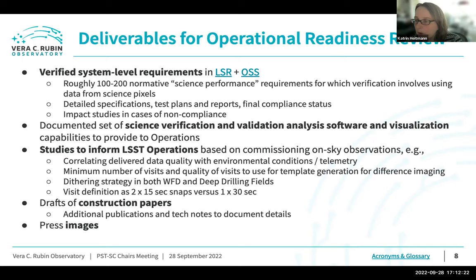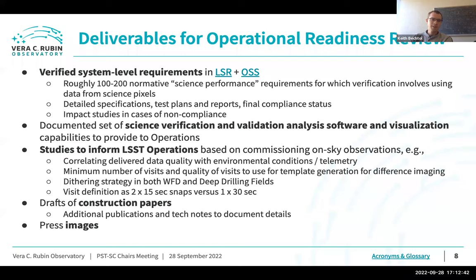I see a hand from Katrin. I have a quick clarification question: the verified system-level requirements are already written up and you have a list of what you will deliver. Is the same true for science verification and validation, or is there still room for science collaborations to provide input? For science validation there is a wide range of possibility. We will try to get as far as we can during commissioning, but having some sense of priorities from the community is really valuable. I'll talk about how we're attempting to do that — the in-kind contribution program is one way to address it.